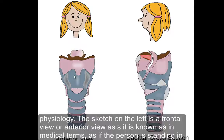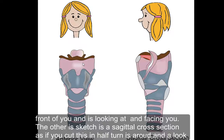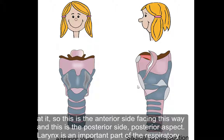The sketch on the left is a frontal view, or anterior view as it is known in medical terms, as if the person is standing in front of you facing you. The other sketch is a sagittal cross-section — as if you cut this in half, turned it around, and looked at it. This is the anterior side and this is the posterior side.